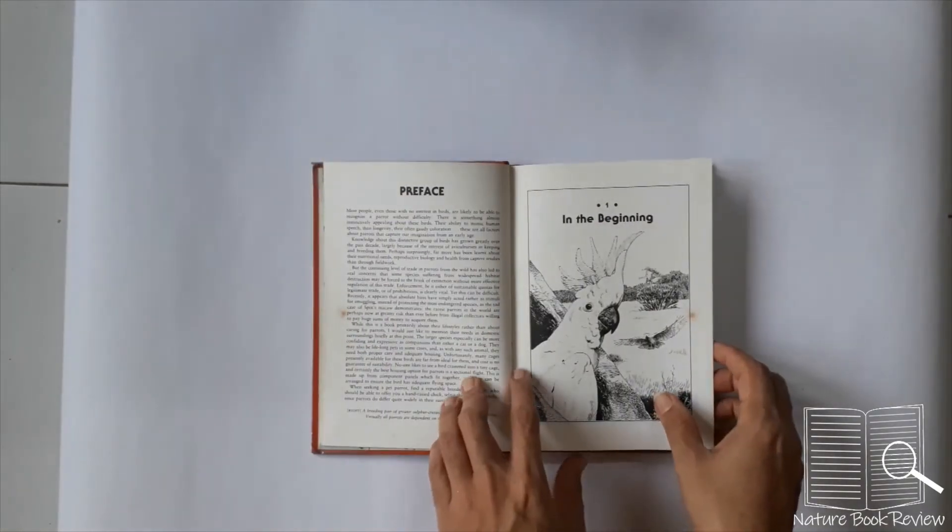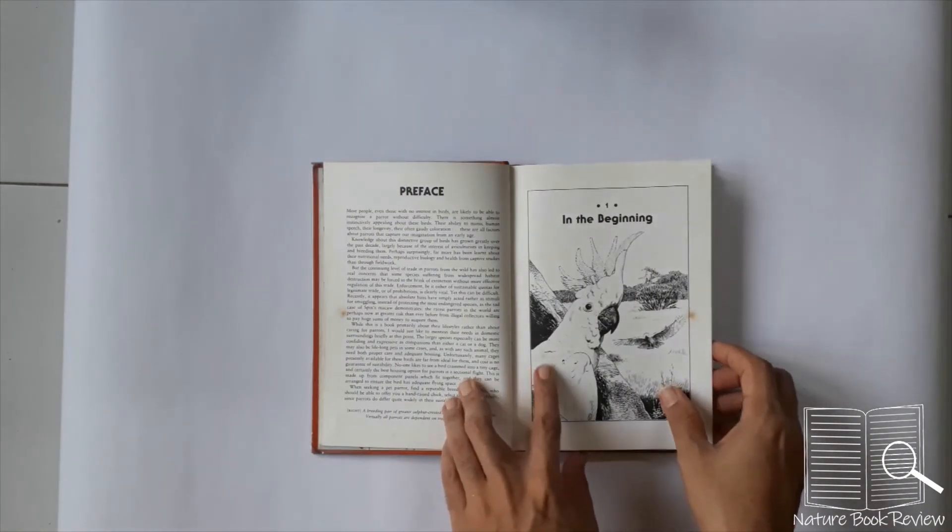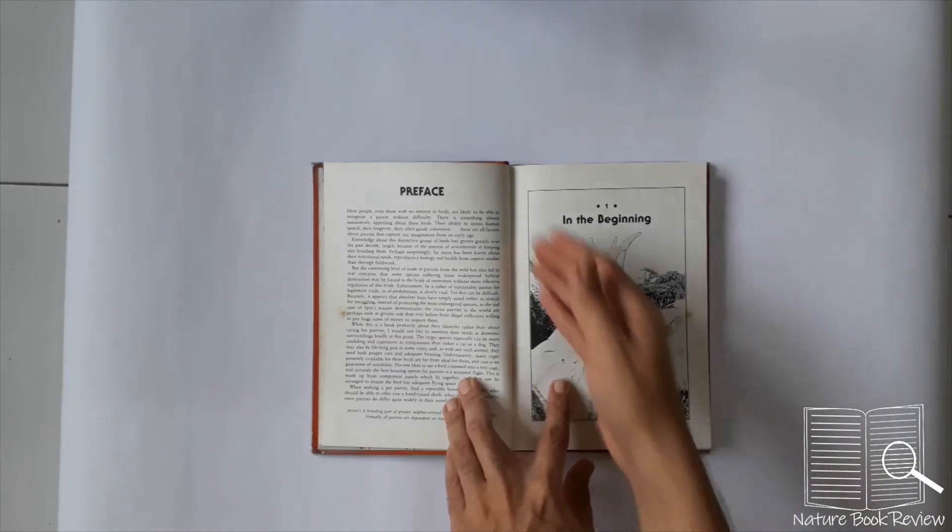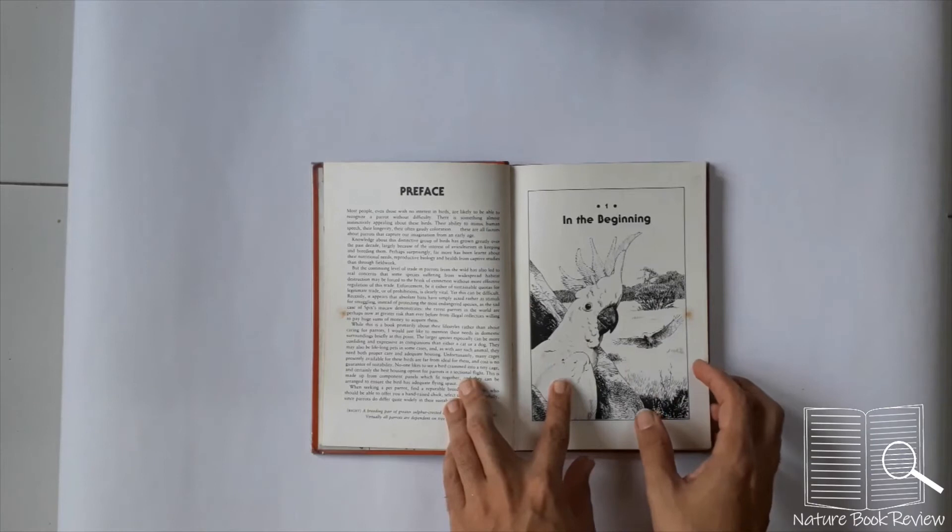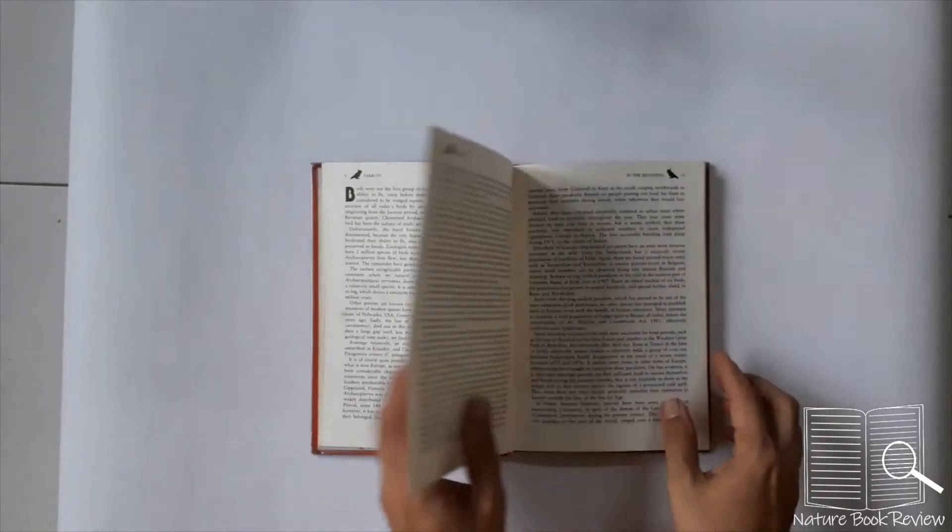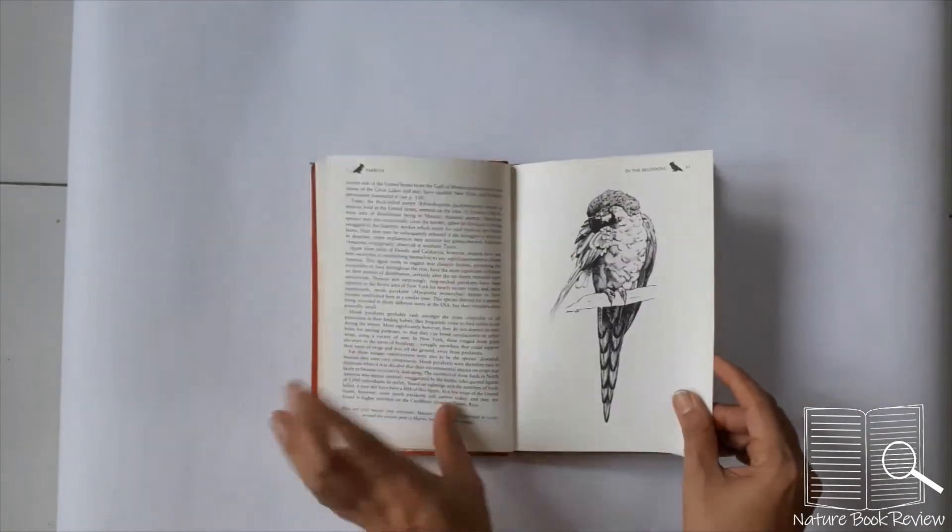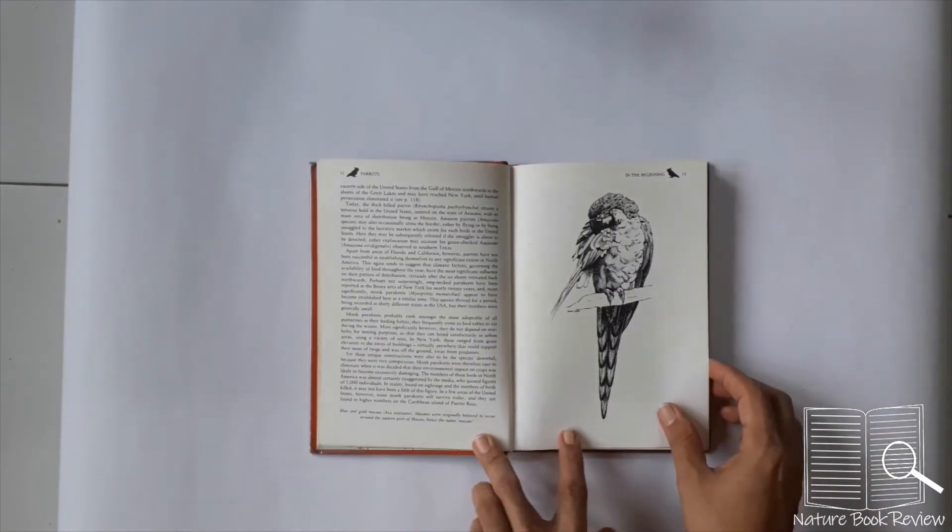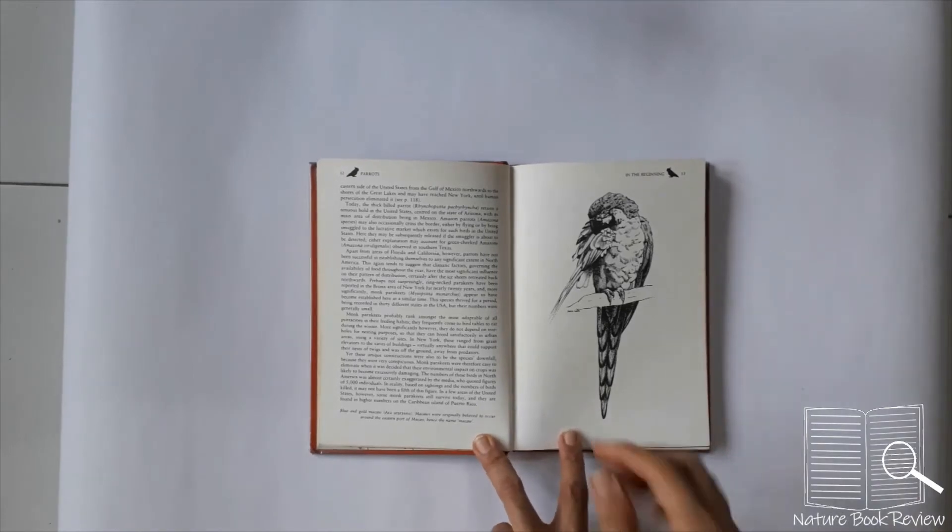You can see the text is organized in single column with right side alignment. The font is also crisp and readable. There are not many photographs in the book, but it is loaded with lot of information. There are black and white drawings of the parrots, different species of parrots.